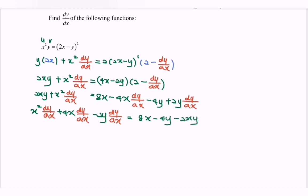So if we factor out the dy/dx, we have dy/dx bracket x² plus 4x minus 2y. Equals to 8x minus 4y minus 2xy.